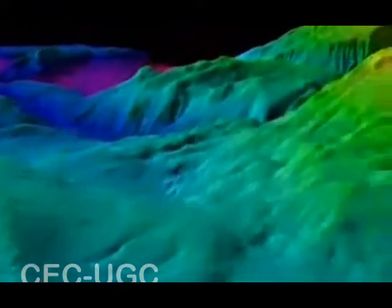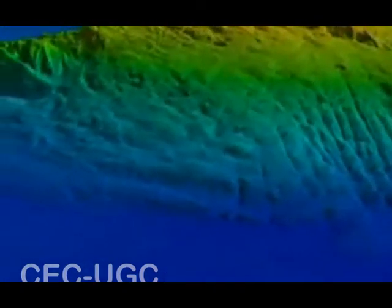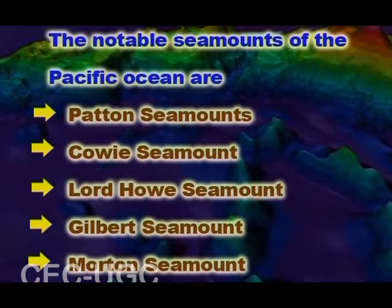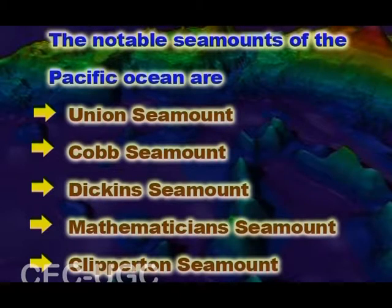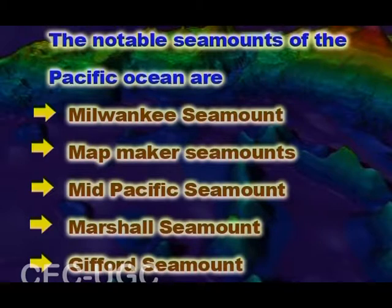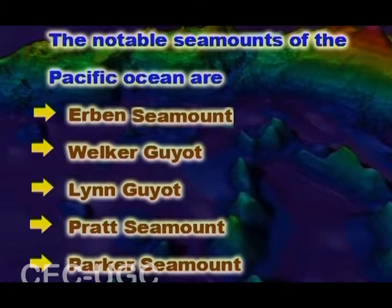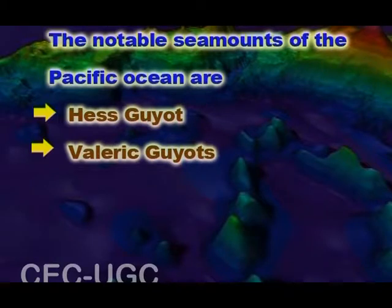The Pacific Ocean contains several long seamount chains formed by hotspot volcanism, including the Hawaiian-Emperor Seamount Chain and the Louisville Seamount Chain. Bathymetric profiles have shown 10,000 seamounts with more than 1 km elevation. The notable seamounts of the Pacific Ocean include Patton, Cowie, Lord Howe, Gilbert, Martin, Union, Cobb, Dickens, Mathematician, Clipperton, Milwaukee, Mapmaker, Mid-Pacific, Marshall, Gifford, Urban, Welker Guyot, Lynn Guyot, Pratt, Parker, Hess Guyot, and the Valerie Guyots.